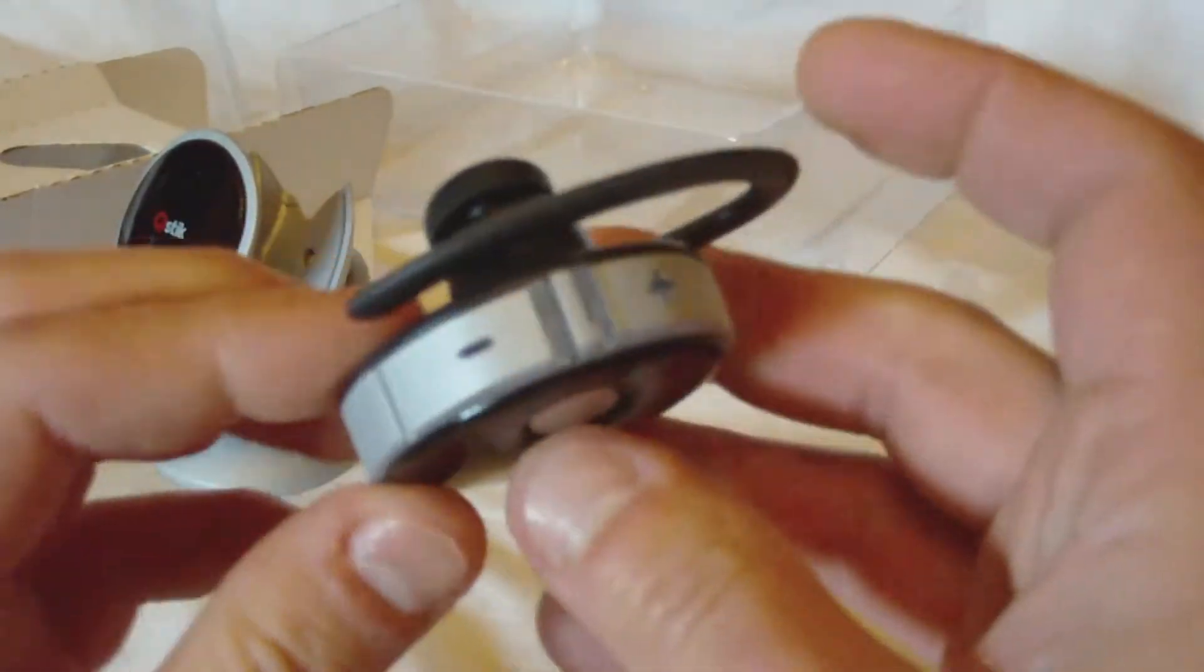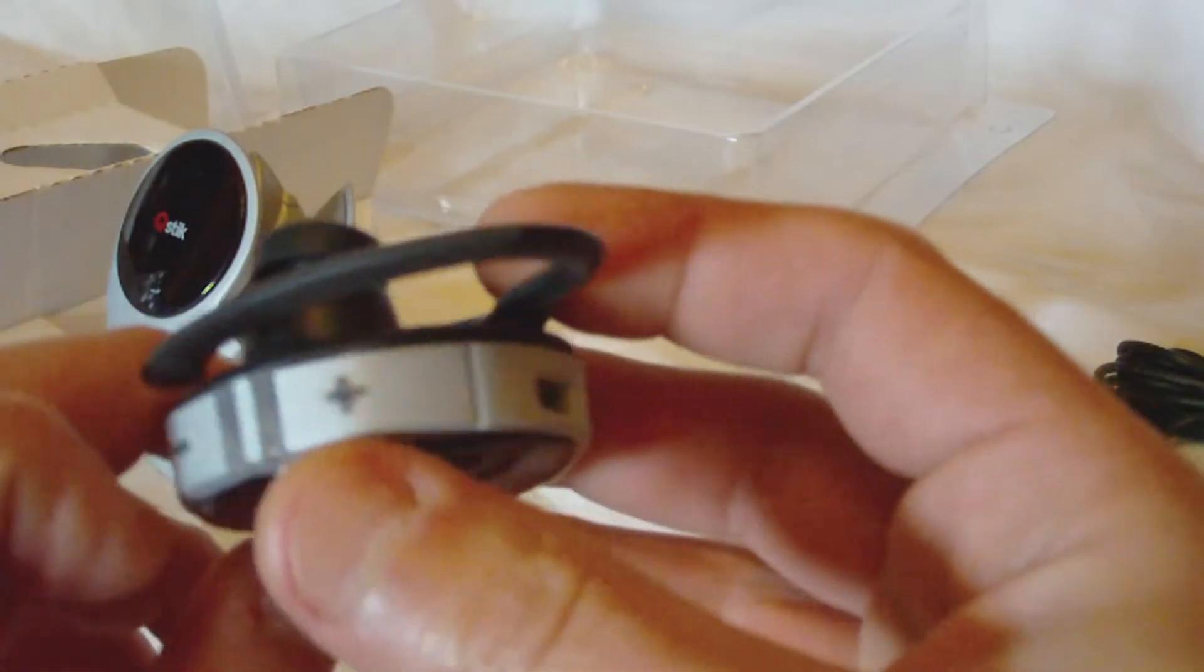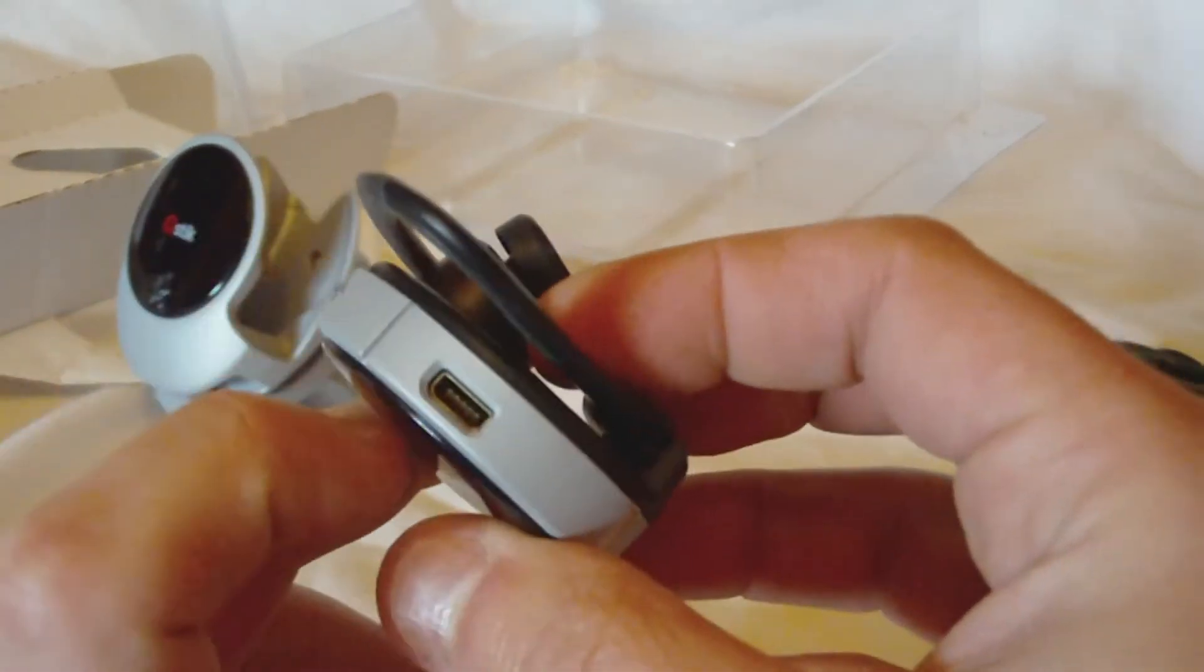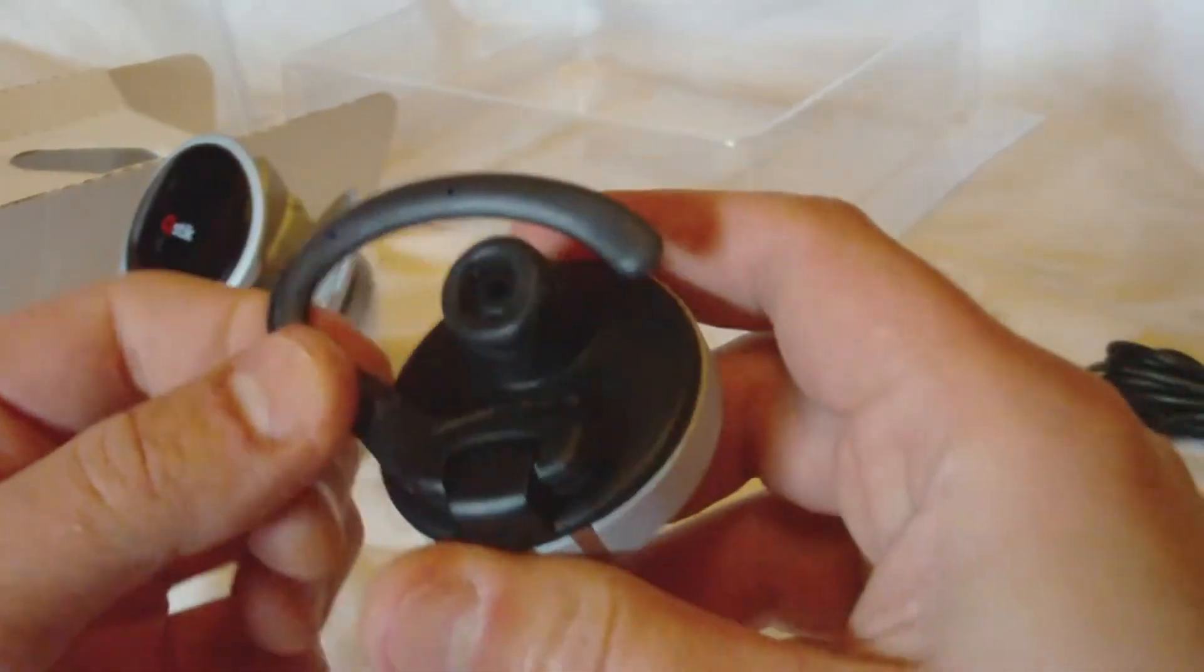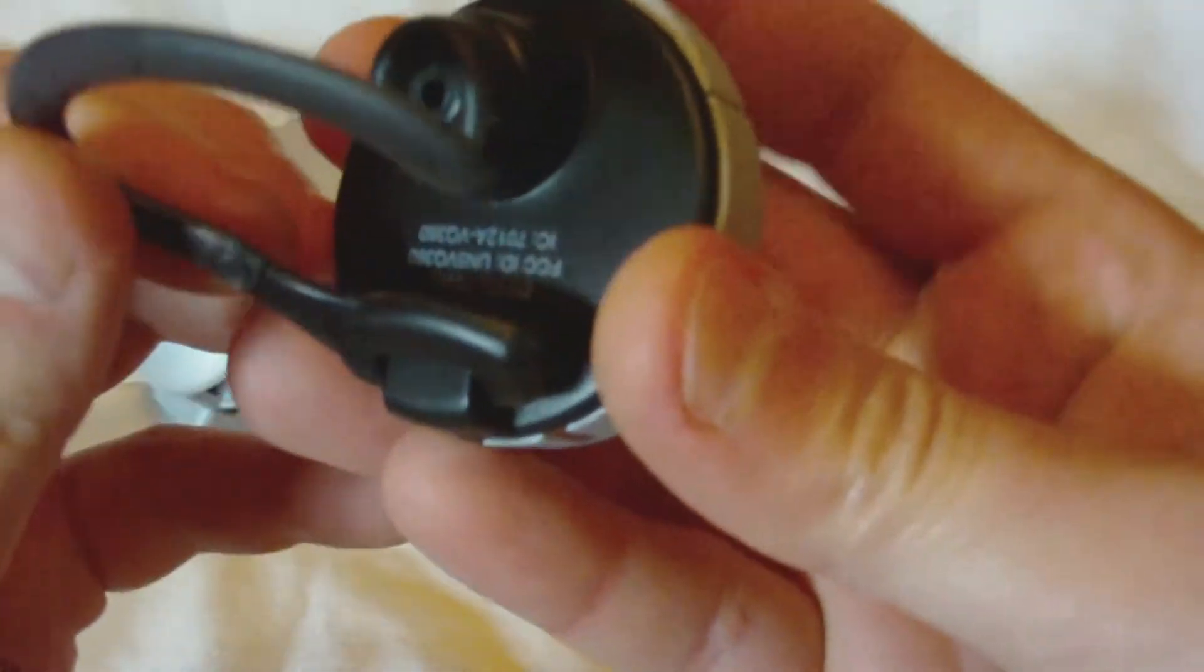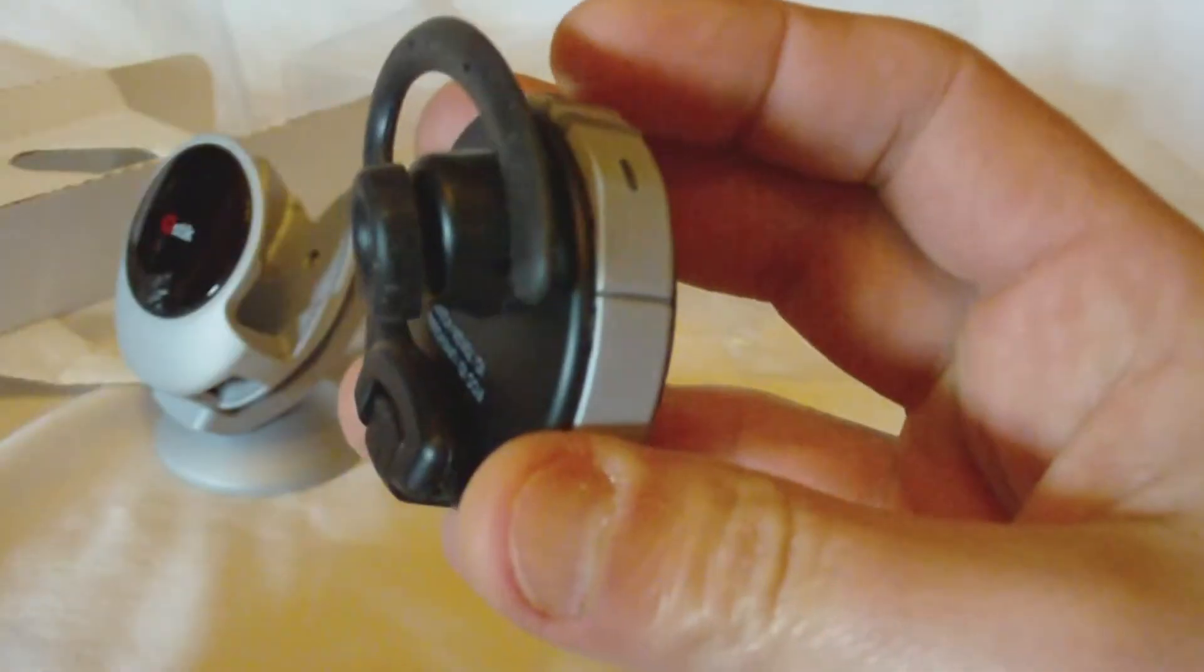We've got one button here. Here's volume, plus minus. Looks like they light up themselves. Again, there's a USB port. Here is the ear loop and there's a little earbud.